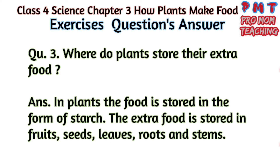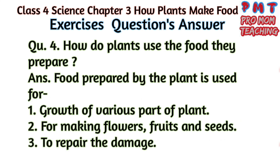Question 3: Where do plants store their extra food? Answer: The food is stored in the form of starch. The extra food is stored in fruits, seeds, leaves, roots and stems. Question 4: How do plants use the food they prepare? Answer: Food prepared by the plant is used for: first, growth of various parts of the plant; second, for making flowers, fruits and seeds.